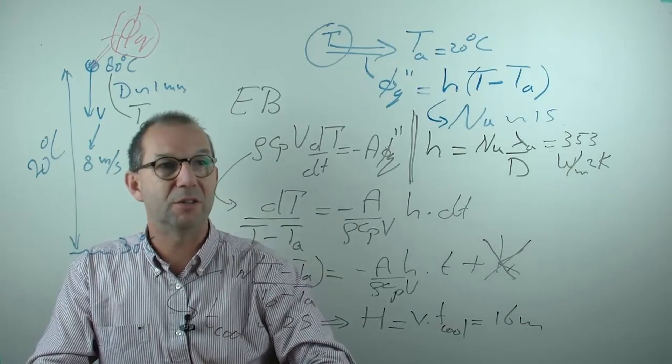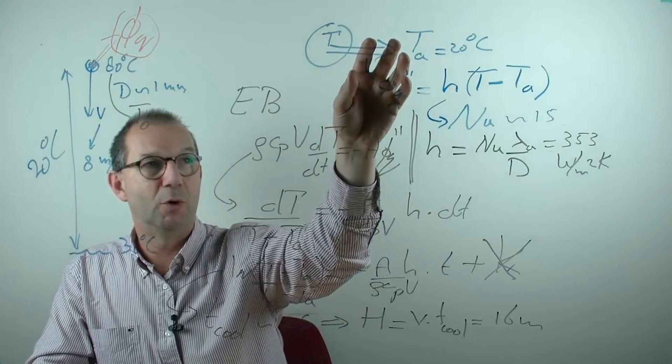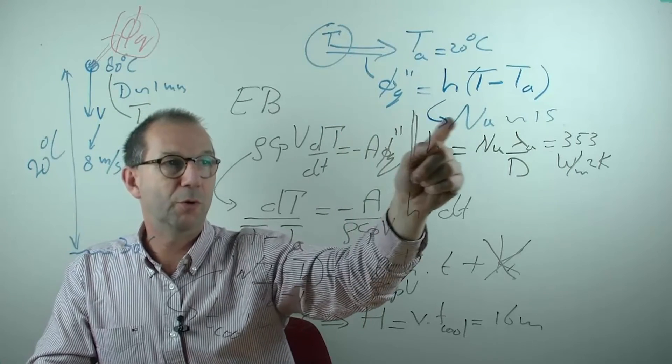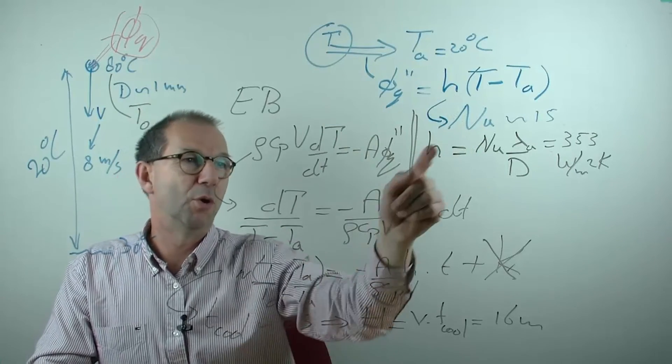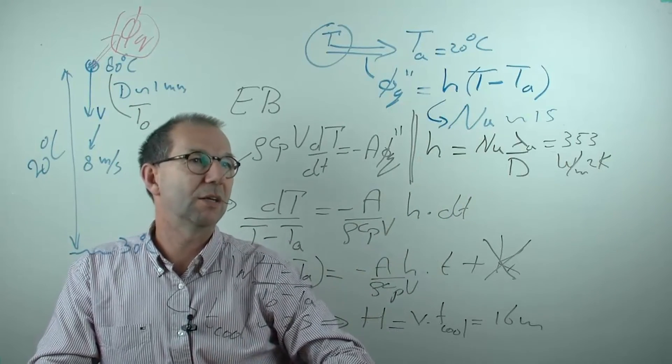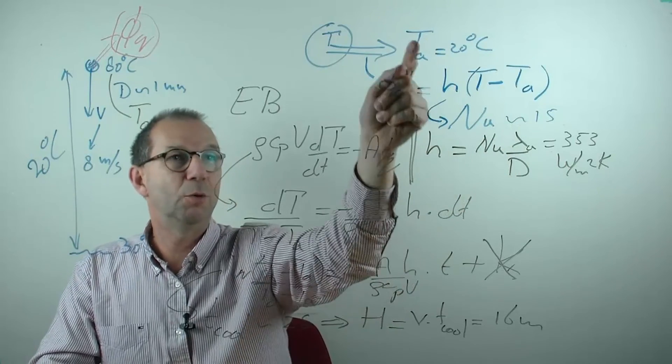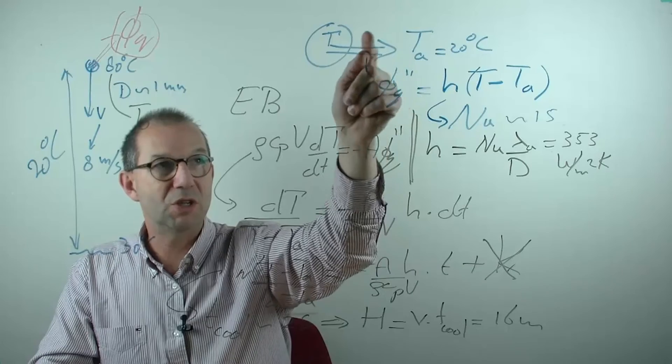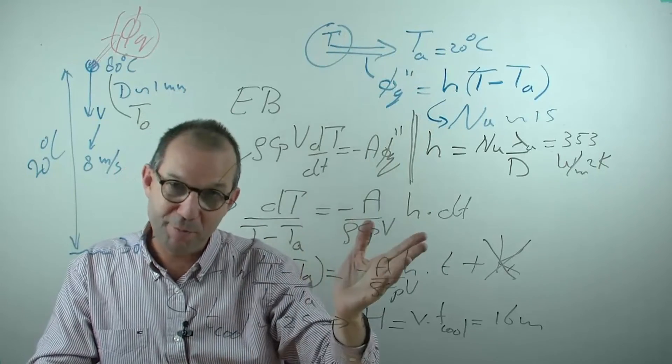So let me recap what we did. We realized that there is heat transfer because there is driving force. I took for that the heat transfer type of modeling. I looked for this situation at the Nusselt number in books or on internet. Once I have the Nusselt number I can compute the heat transfer. In doing so I assume that the resistance is on the outside, not in the particle. And I need to check that. But believe me, it's true.